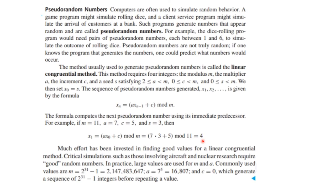Much effort has been invested in finding good values for linear congruence formulas because a lot of simulations require some very good random number streams. In practice, some very big numbers are used. m in this formula, the mod, is this huge number. a is this, and c equals zero. And that will generate a sequence of this many numbers before repeating a value. That's pretty random.